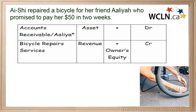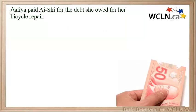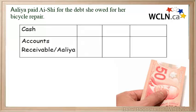Remember that revenue is increasing owner's equity. Now consider the transaction where Aaliyah pays Ashi for the debt she owed for her bicycle repair. The two accounts affected are Cash and Accounts Receivable. Notice that this is not revenue — the revenue has already been recorded when the service was provided. Cash is increasing while Accounts Receivable is decreasing. Cash increases on the debit side and Accounts Receivable decreases on the credit side.